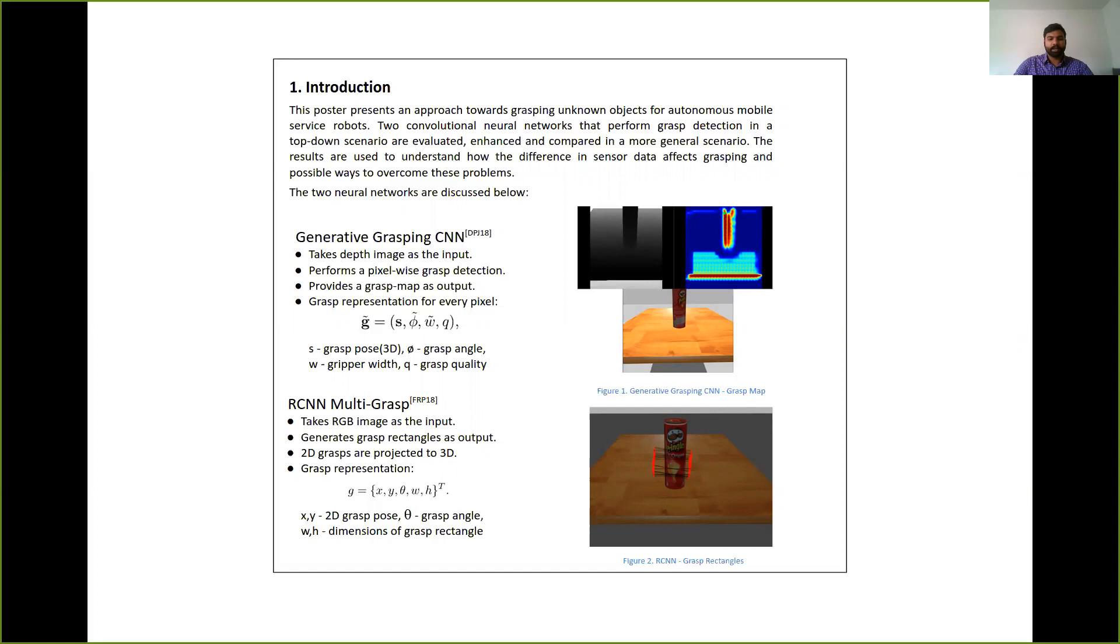Then we have the RCNN multi-grasp network. This network takes the RGB image as the input and generates grasp rectangles as the output. So the grasp rectangles generated are in 2D and then are projected to the 3D space for grasping. Each grasp rectangle is represented by an XY pose, a grasp angle and the dimensions of the grasp rectangle. Both the neural networks were trained on the Cornell grasping dataset, which is widely used in grasping research.